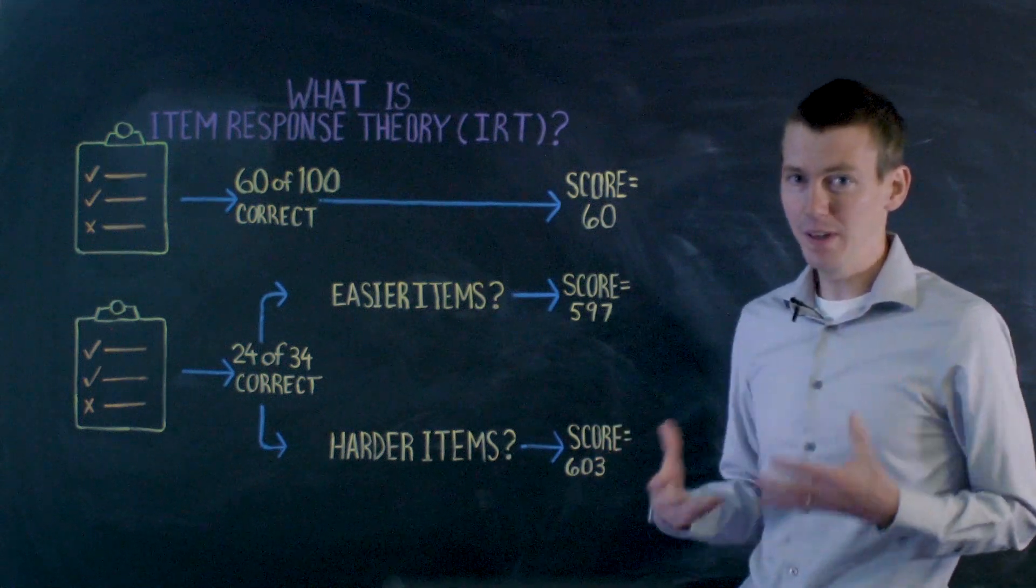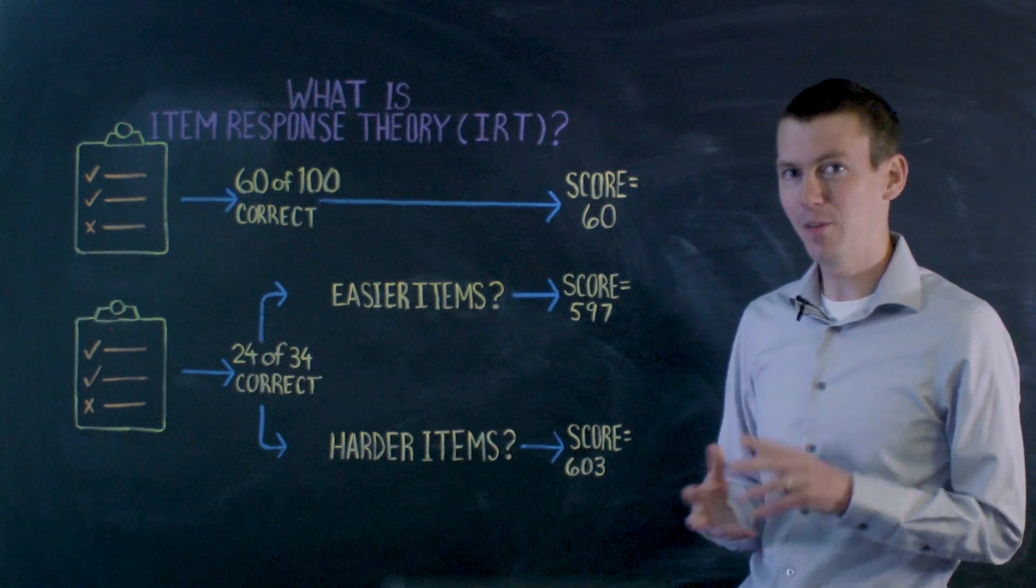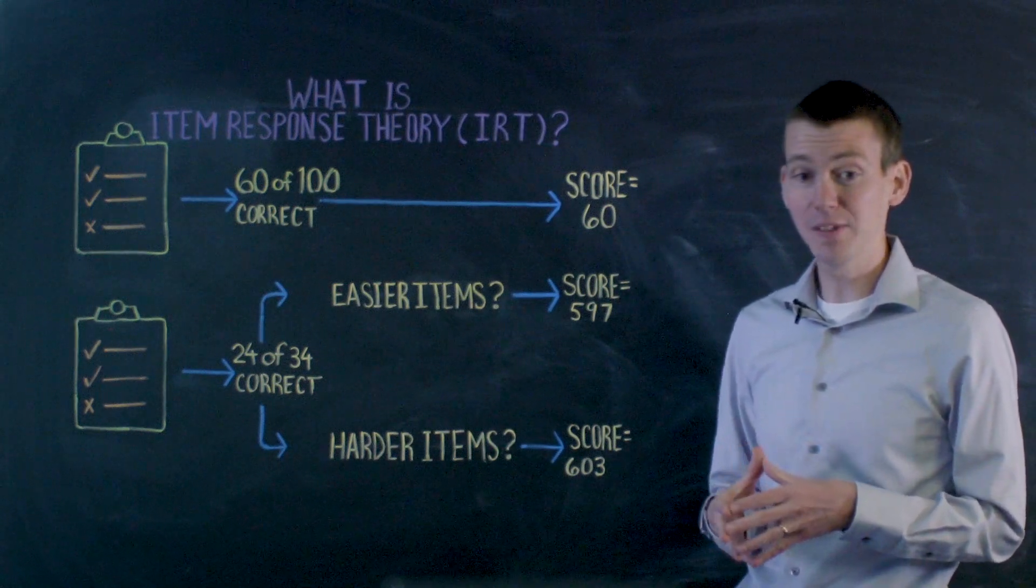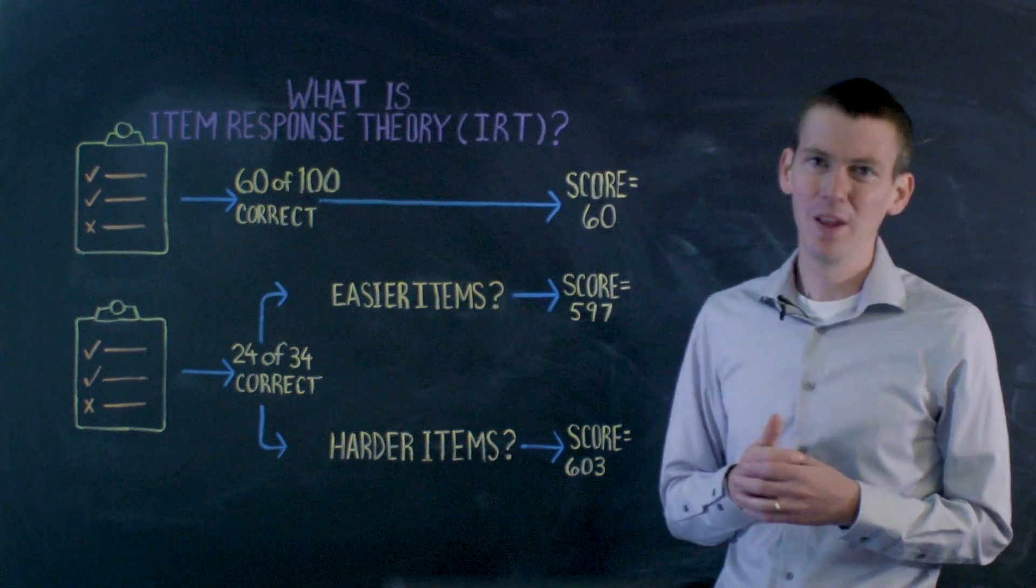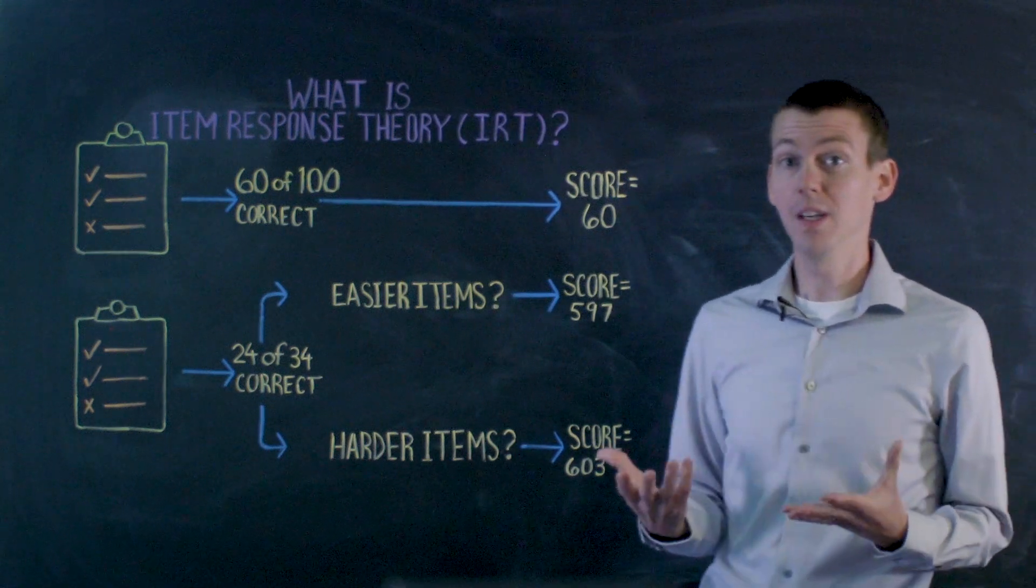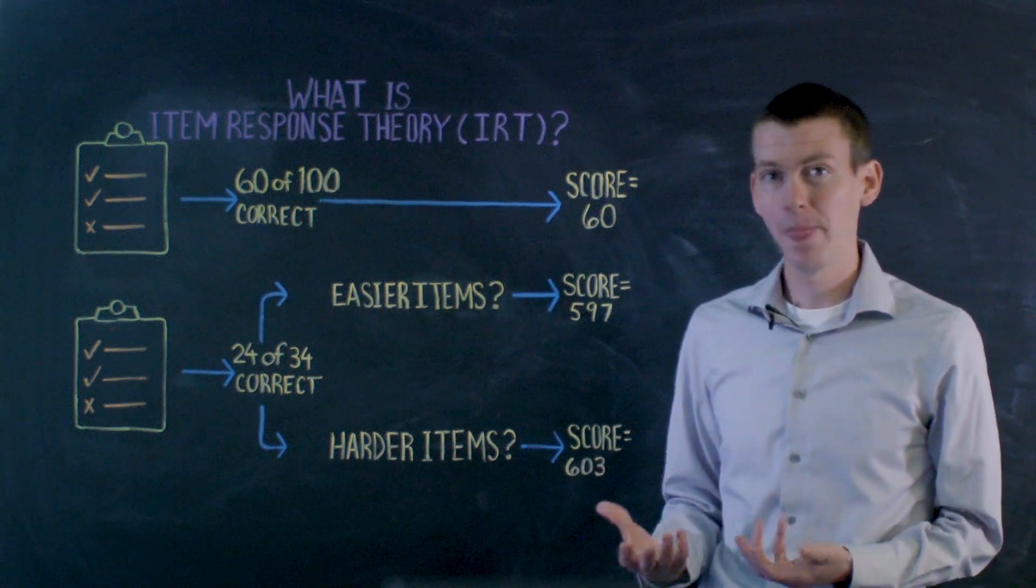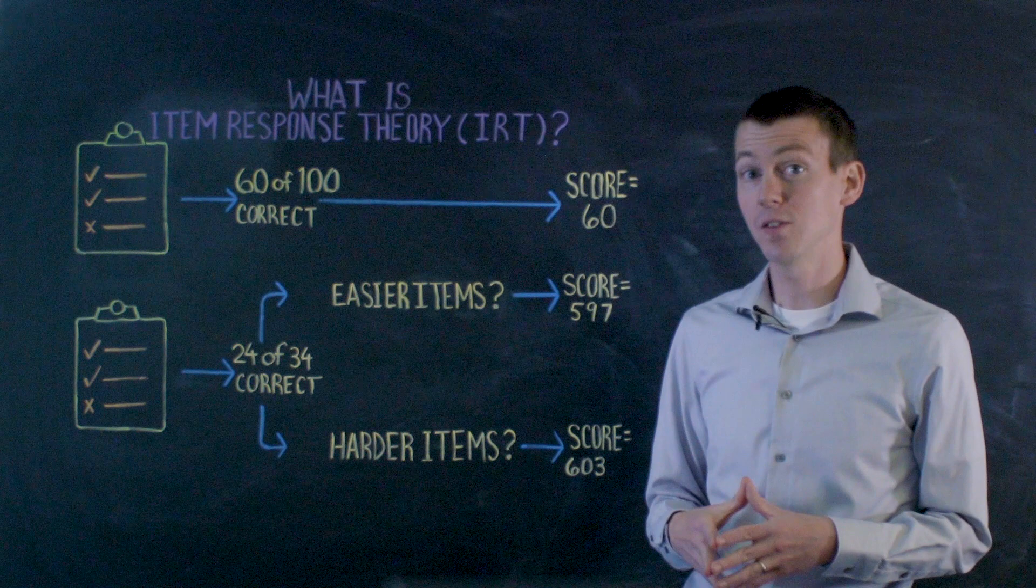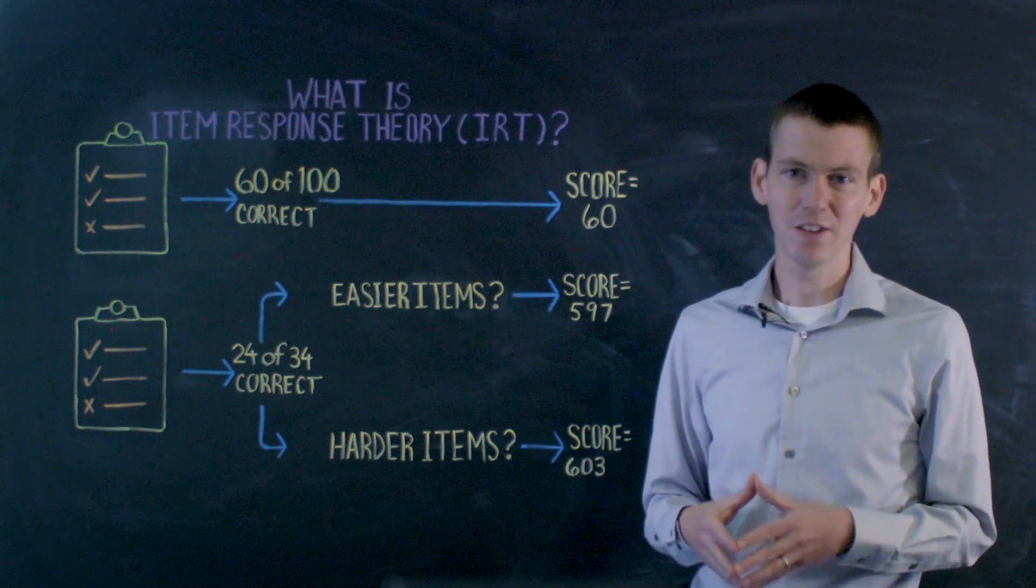So, Item Response Theory models are very useful. And when we think about them, there's a variety of different models that are possible. We can generally categorize them using three different factors. The first factor is the number of abilities that the student has to have to answer the question correctly. The second factor is how we score the questions. And the third factor is the number of parameters that are in the model.